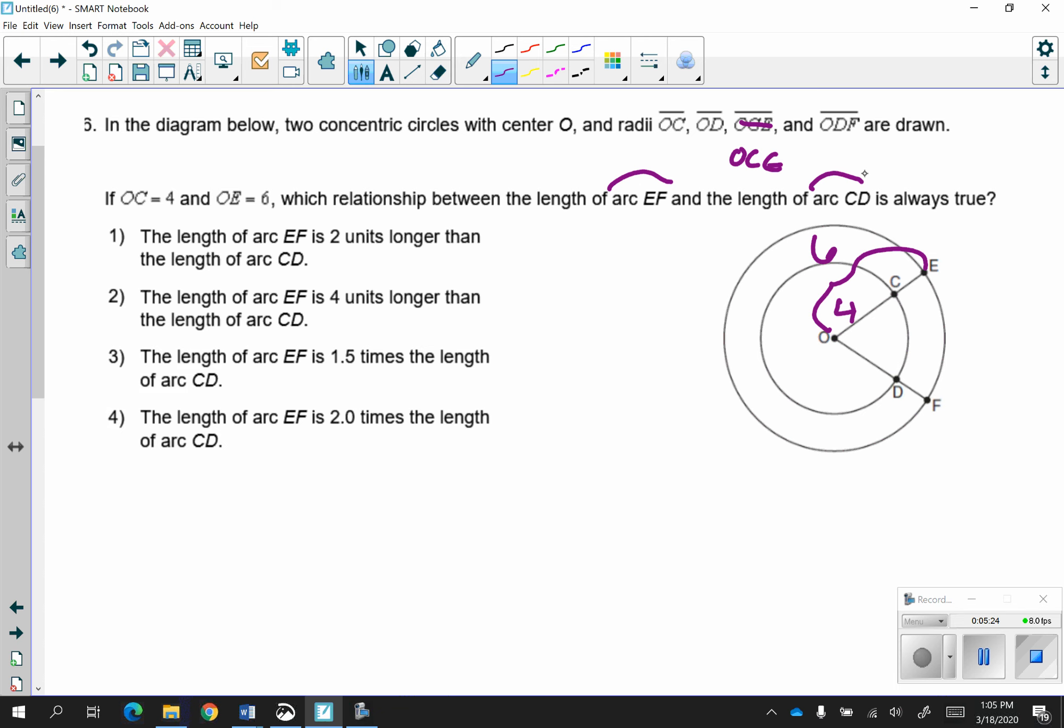So this was growing and getting bigger and bigger and bigger. They say that they want to know the relationship between arc EF and the length of arc CD. This is really just a little to big problem, except if you look, they kept doing arc EF to CD, so they really did big to little. So I'm going to just erase that and make mine big to little.